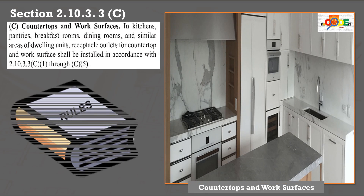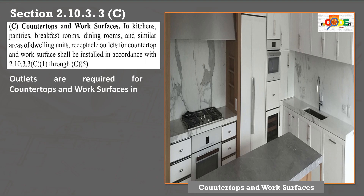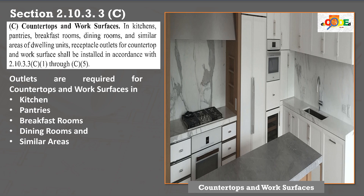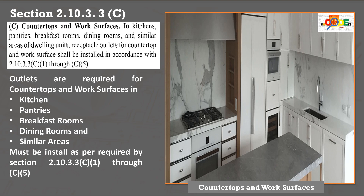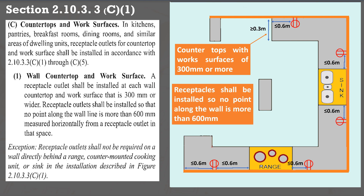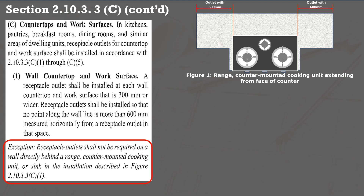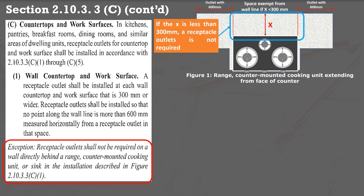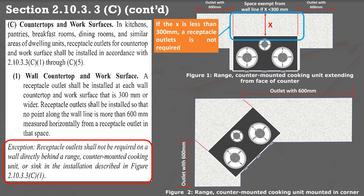For countertops and workspaces, in section 2.10.3.3 C, an outlet is required in countertops and work surfaces of kitchens, pantries, breakfast rooms, dining rooms, and similar rooms, complying with sections C.1 through C.5. Paragraph C.1 states that a countertop 300 mm or wider shall have an outlet such that no point on a wall is over 600 mm or 24 inches from an outlet, with a maximum distance between two outlets of 1,200 mm or 48 inches. Exception: for a cooking range extending from the face of the counter, an outlet is not required if the distance between the back of the range and the wall is less than 300 mm. If the cooking range is mounted in a corner, no outlet is required if that distance is less than 450 mm.